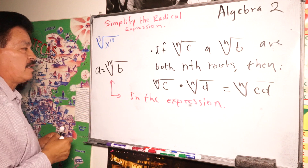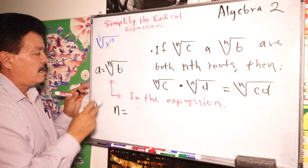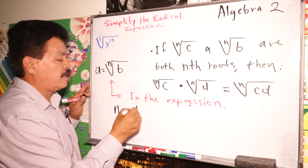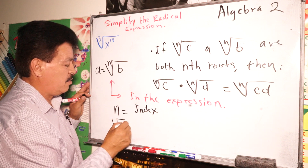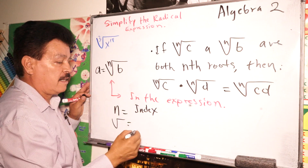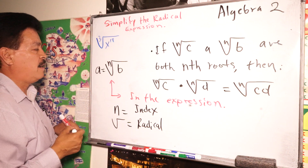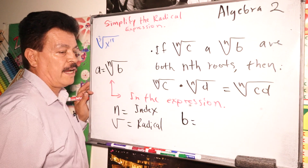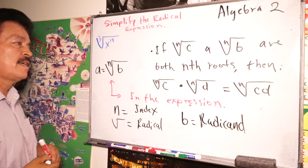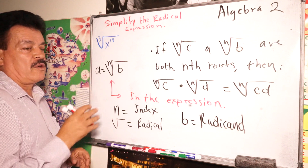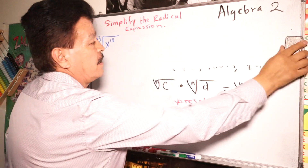In a radical expression, this number is called the index. This symbol is called the radical sign. And B, the expression inside, is called the radicand. Now we are ready to solve our problem.